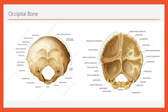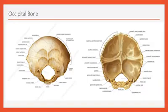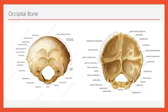Now let's come to the parts individually. First let's see the squamous part. The squamous part has two surfaces: the external surface which is convex outwards and the internal surface which is concave inwards. The squamous part also has three angles: the superior angle, the right lateral angle, and the left lateral angle. Above the lateral angle there is lambdoid border and below the lateral angle there is mastoid border.